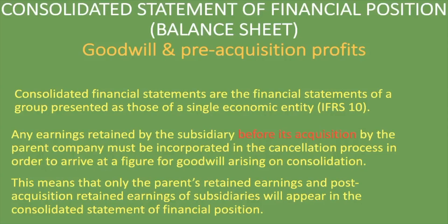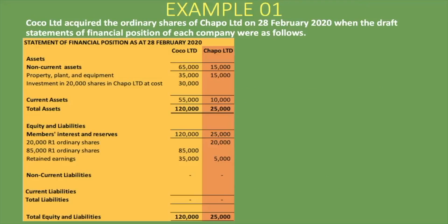Obviously, you need to have understood the first lesson before this one, which will make this one much simpler. You'll find the link to that one in the description below. Now let's take a look at an example of how we handle goodwill and pre-acquisition profits in the consolidated statement of financial position.